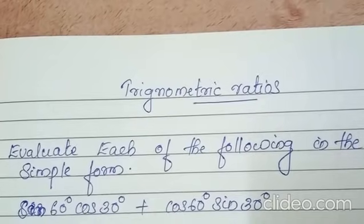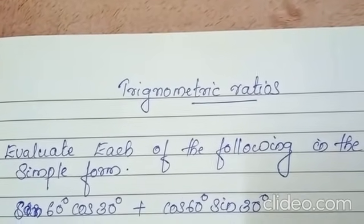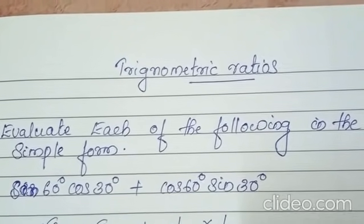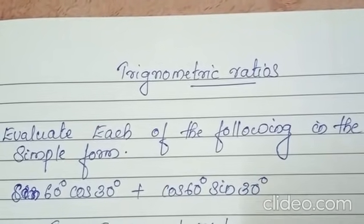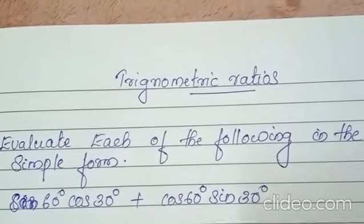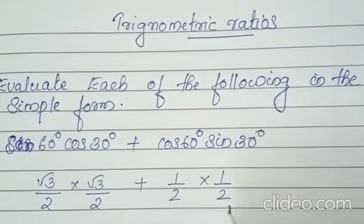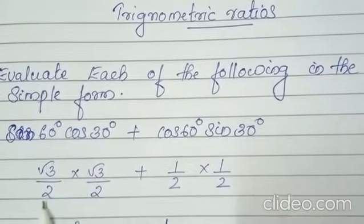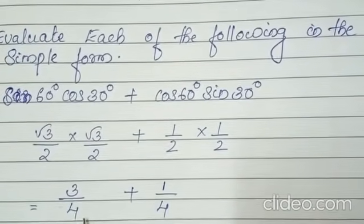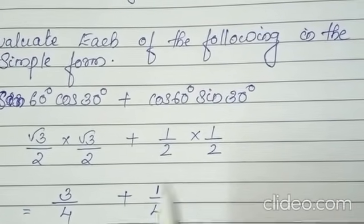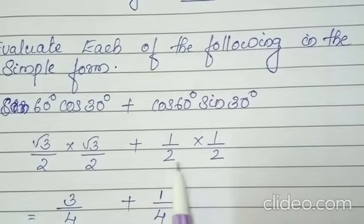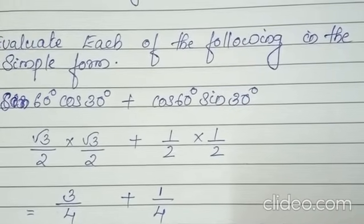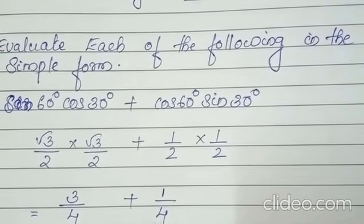We should substitute the value. Sine 60 degree is root 3 by 2, multiplied by cos 30 degree which is also root 3 by 2, plus cos 60 degree which is 1 by 2, multiplied by sine 30 degree which is 1 by 2. So root 3 into root 3 gives 3, and 2 into 2 gives 4. We got denominators the same.